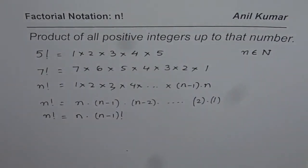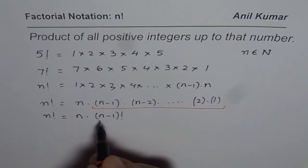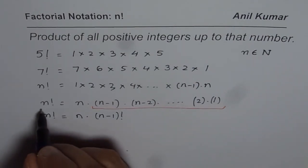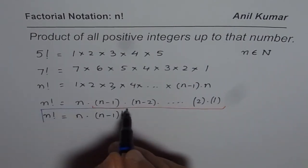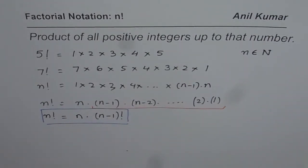Since this part here is kind of n minus 1 factorial. Do you see that? So this is a very interesting way of writing n factorial in terms of other factorials. So what I have written here is n factorial could be written as n times n minus 1 factorial.